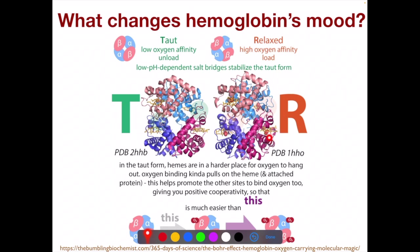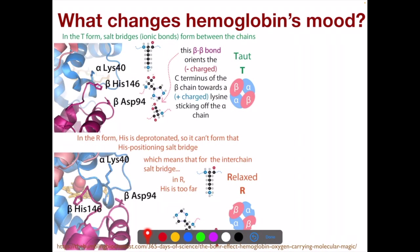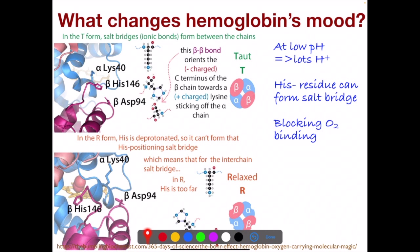In the relaxed form, the heme pocket is in a much more open state, making it much easier for oxygen to bind. When one oxygen binds, it pulls the pockets open so that they are all in the relaxed form. In the taut form, we have low pH with lots of protons available. A proton becomes associated with the histidine here, allowing a salt bridge to form between these amino acid residues, thereby blocking access to the heme. This happens on all four subunits and all are blocked.